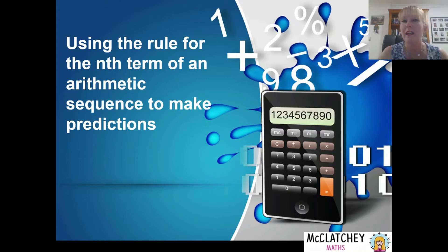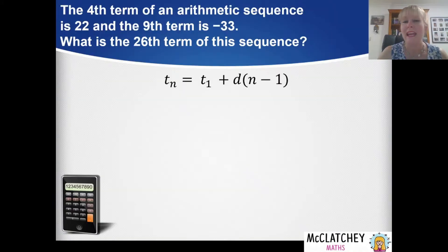We're going to take our general rule for an arithmetic sequence and use that with a single worded problem. Here's the problem right here: the fourth term of an arithmetic sequence is 22 and the ninth term is negative 33. What is the 26th term of the sequence?